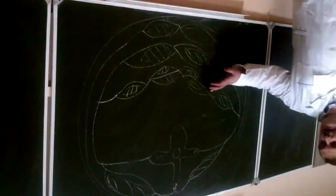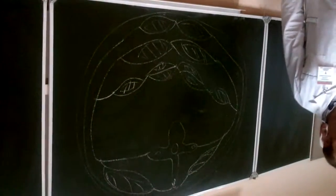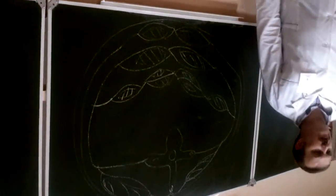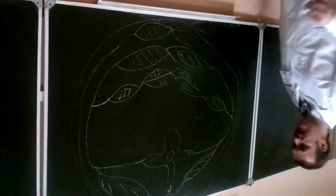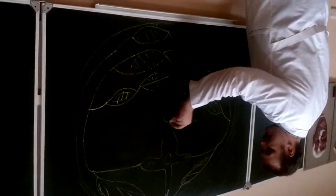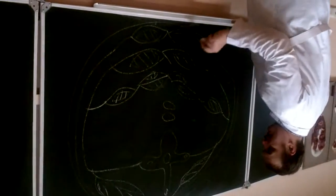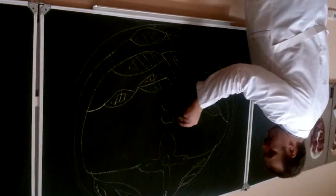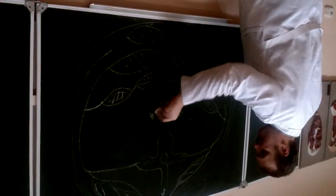Deep layer of fascia coli propria, lamina profunda of fascia coli propria. Next, it is the organs — pharynx, trachea — and vessels and nerves.